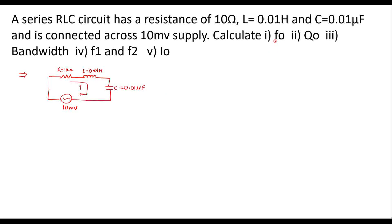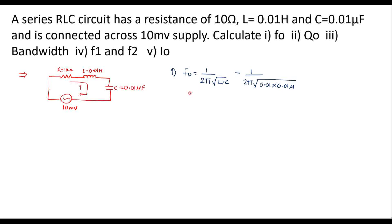First, we will calculate the resonant frequency F0. That is F0 is equal to 1 over 2 pi under root L into C. Simplifying this, that is 1 over 2 pi under root of L value 0.01 into C value 0.01 micro. Simplifying this, we will get F0 is equal to 15.914 KHz.